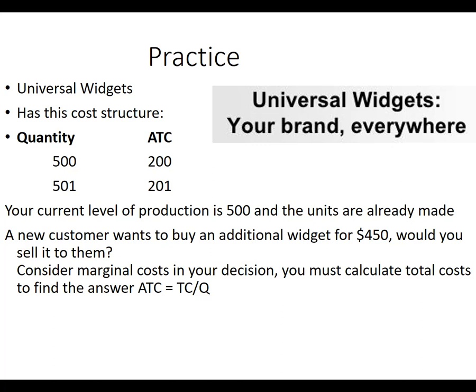So you're running a widget company. They have this cost structure — the quantity. We can produce 500 units; we already did produce 500 units. We can produce an additional unit, and the average total cost of that additional unit is going to be $201. They want to buy the unit — they approach you and want to buy the unit for $450, which would be above the average total cost of that 501st unit. The question is: would you sell it to them? We always want to profit maximize, so I suggest you pause the video and think about it. This is the kind of question that you may face in your career.